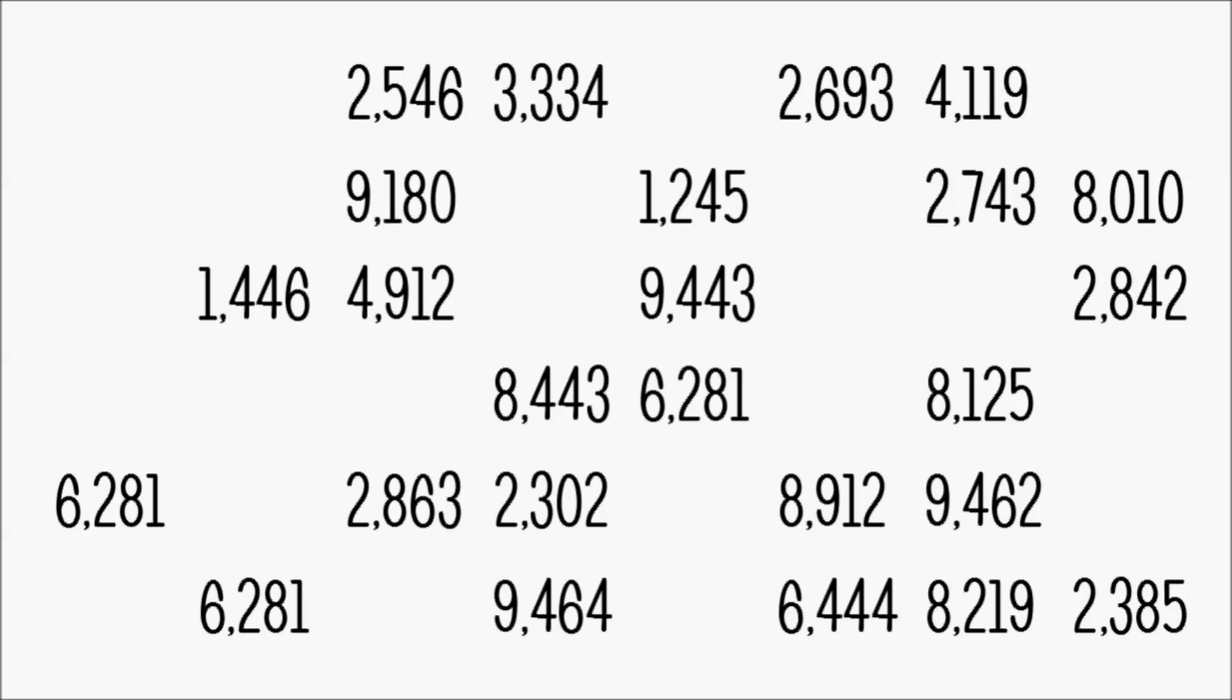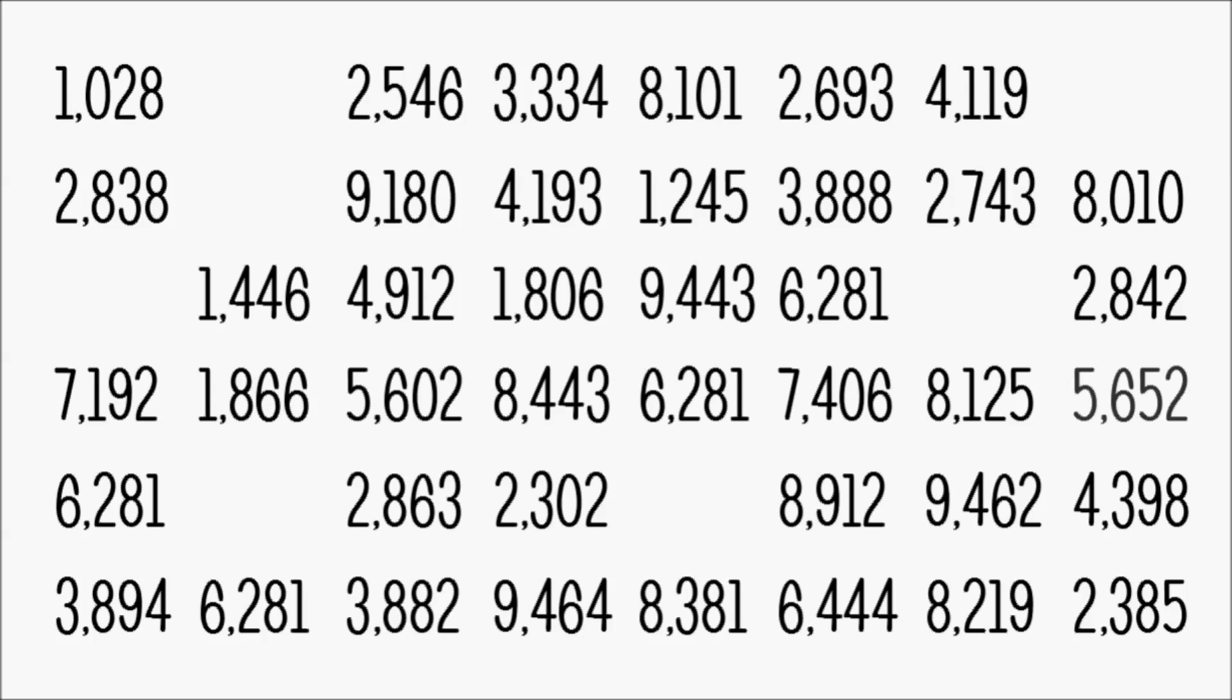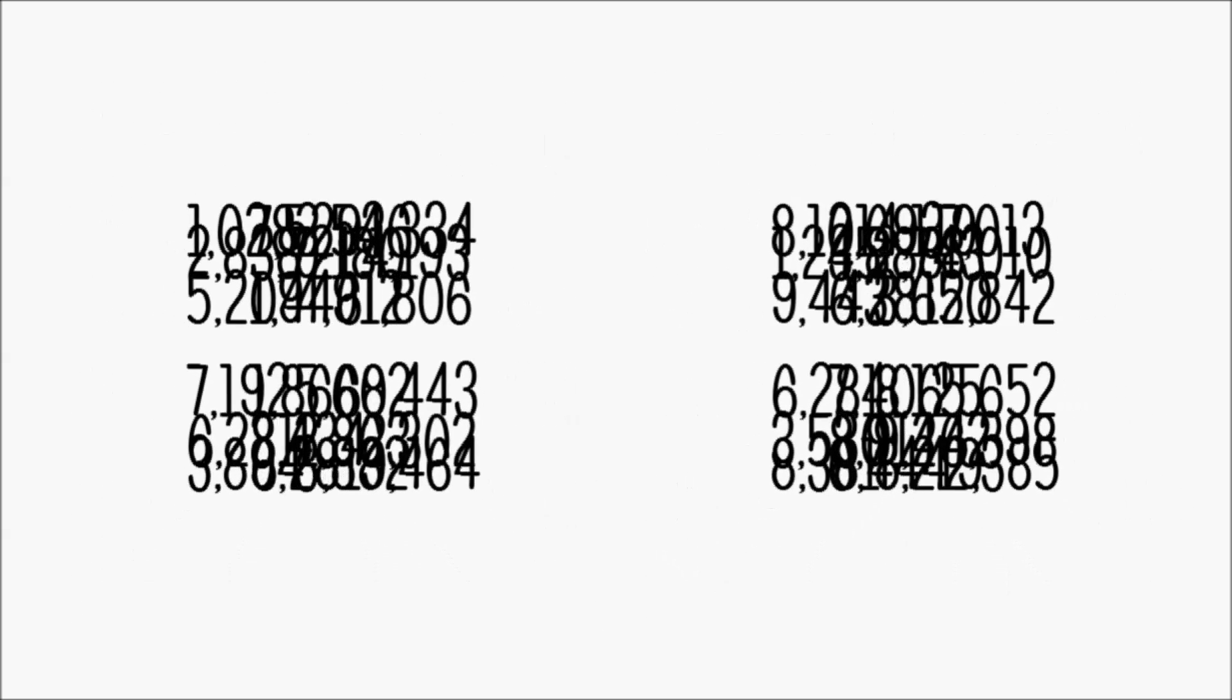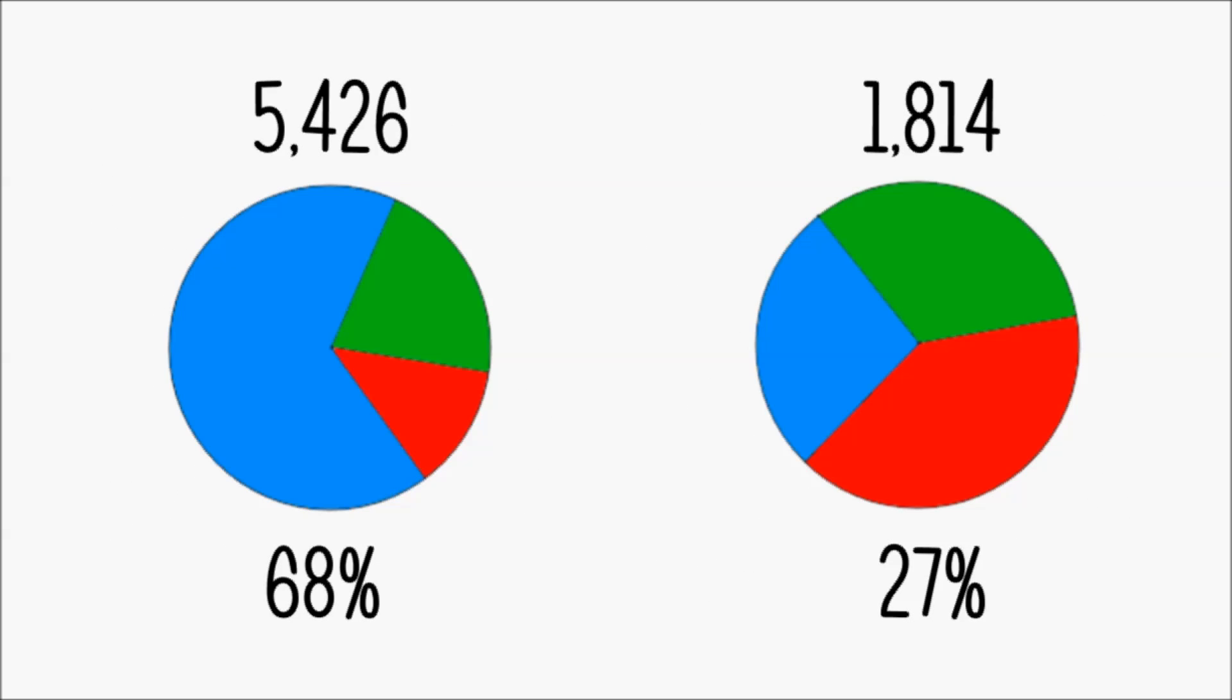All descriptive statistics are more or less about summarizing datasets, which normally consist of many data, by using diagrams or just a few indicators. In a different video, I already have introduced one group of such indicators, the measures of central tendency, also called means.